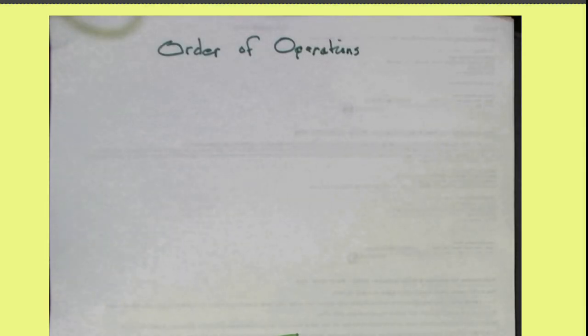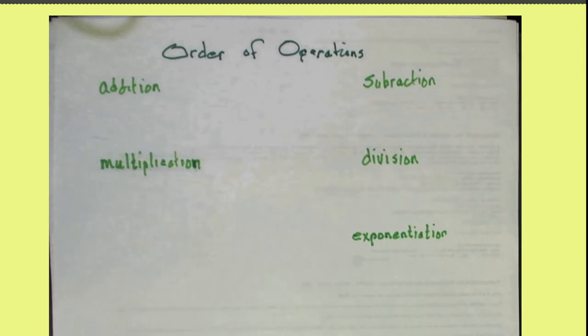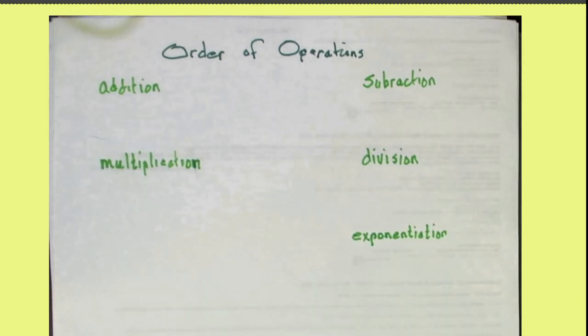The formulas we use this semester will generally be made up of a combination of five binary operations: addition, subtraction, multiplication, division, and exponentiation. Each of these are called binary operations because they take two numbers and put those numbers together to produce a new number.